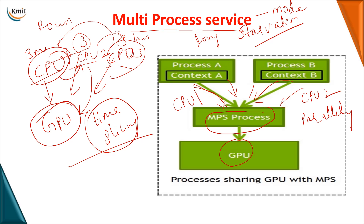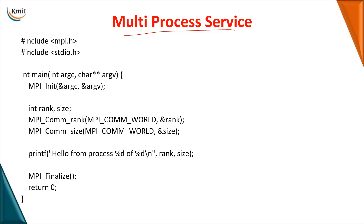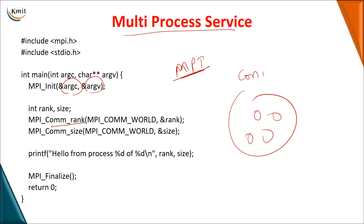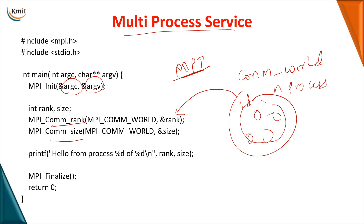To implement multiprocess service in programming, we use MPI — the Multi-Programming Interface. The MPI session is started with MPI_Init(), passing the argument counter and argument vector. This interface allows us to designate a rank to each process involved in the communication within MPI_COMM_WORLD. You can find the rank of each process using MPI_Comm_rank(), and you can also determine the number of processes involved in the communication. MPI is generally used to enable multiple CPUs to work in collaboration with a single GPU.